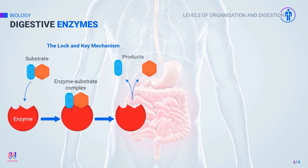A simple model for how enzymes work is the lock and key theory. It describes how the specific active site of the enzyme — the lock — only fits with one substrate, the key. When they bind, they form a complex and the reaction can proceed. After the reaction, the products are released from the enzyme active site.